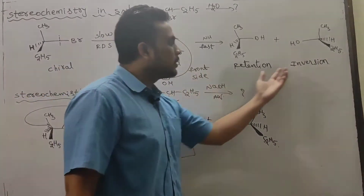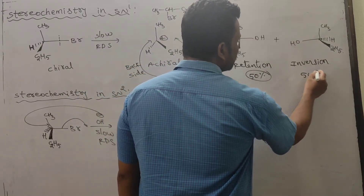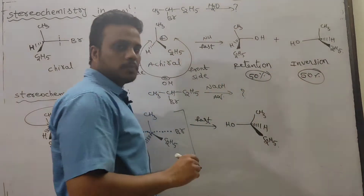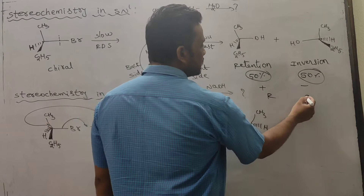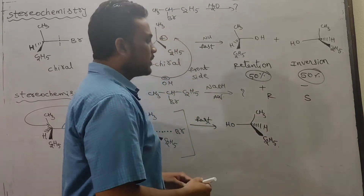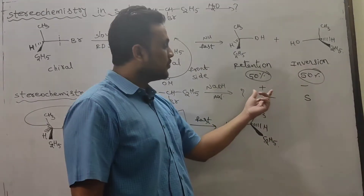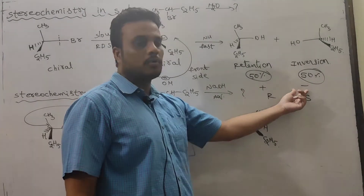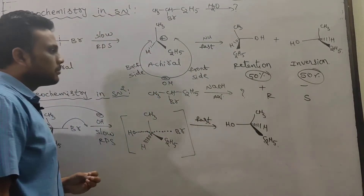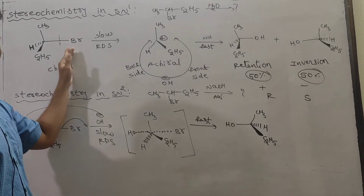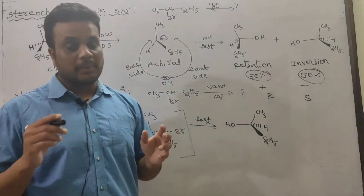In SN1 mechanism, both retention and inversion take place, so both products are formed in equal yields — 50% retention and 50% inversion. If it is (+) it gives (−) and vice versa; if it is R it gives S. This means 50% dextro and 50% levo isomers are formed, and that mixture is called a racemic mixture. So in SN1, when you take a chiral haloalkane with optical activity, the product is always a racemic mixture.